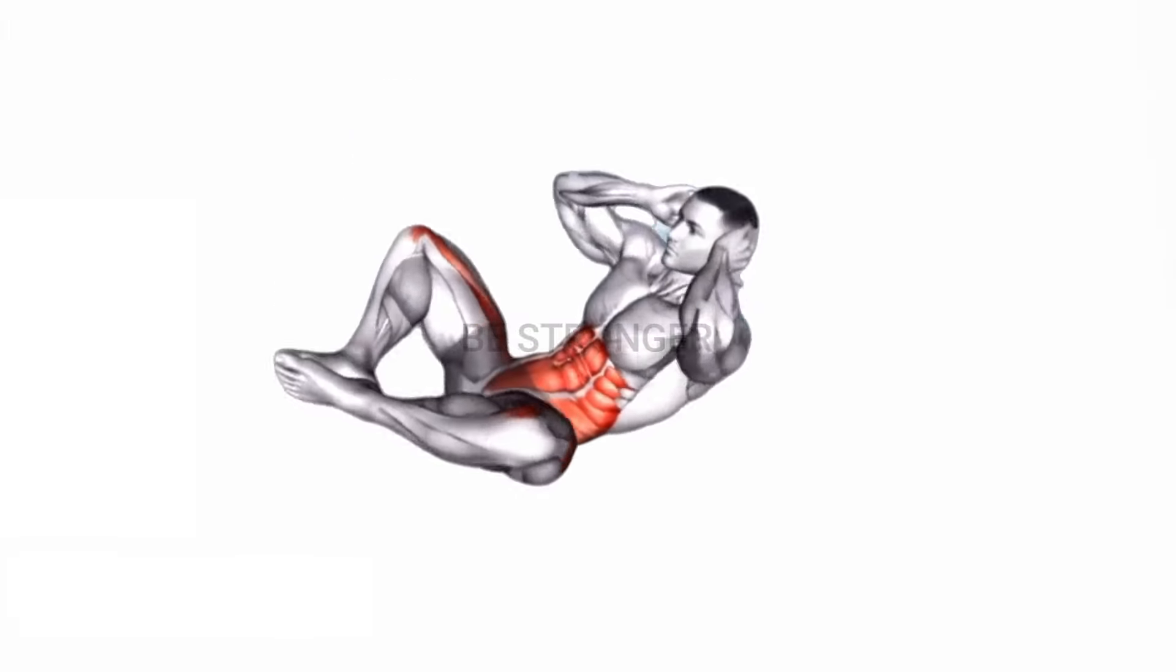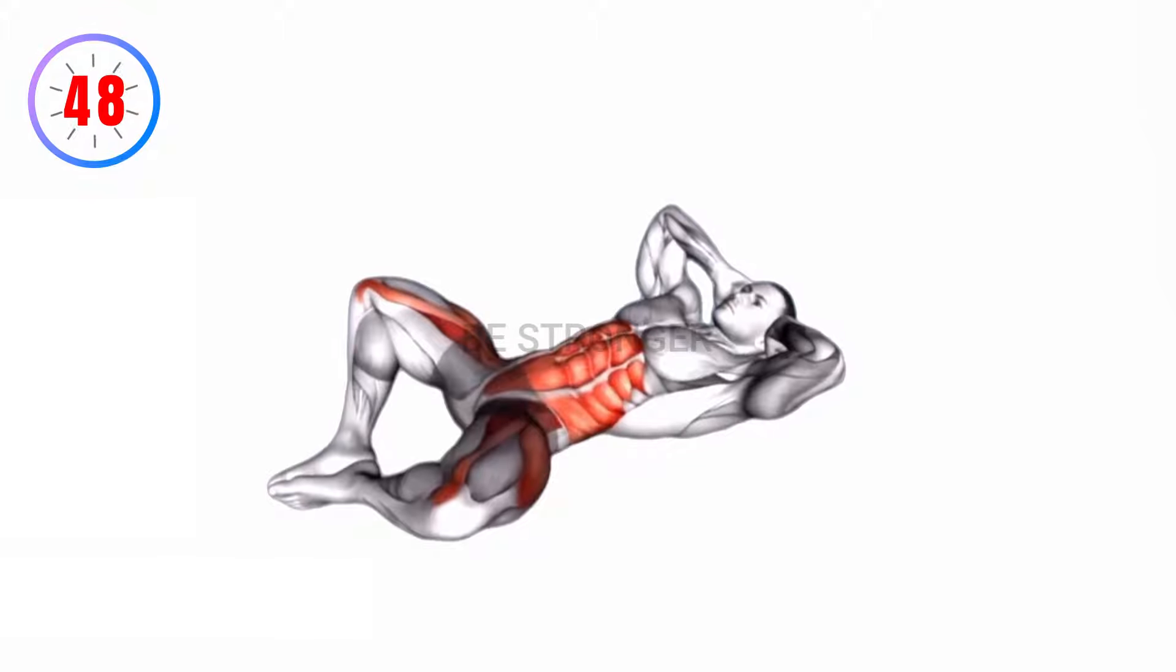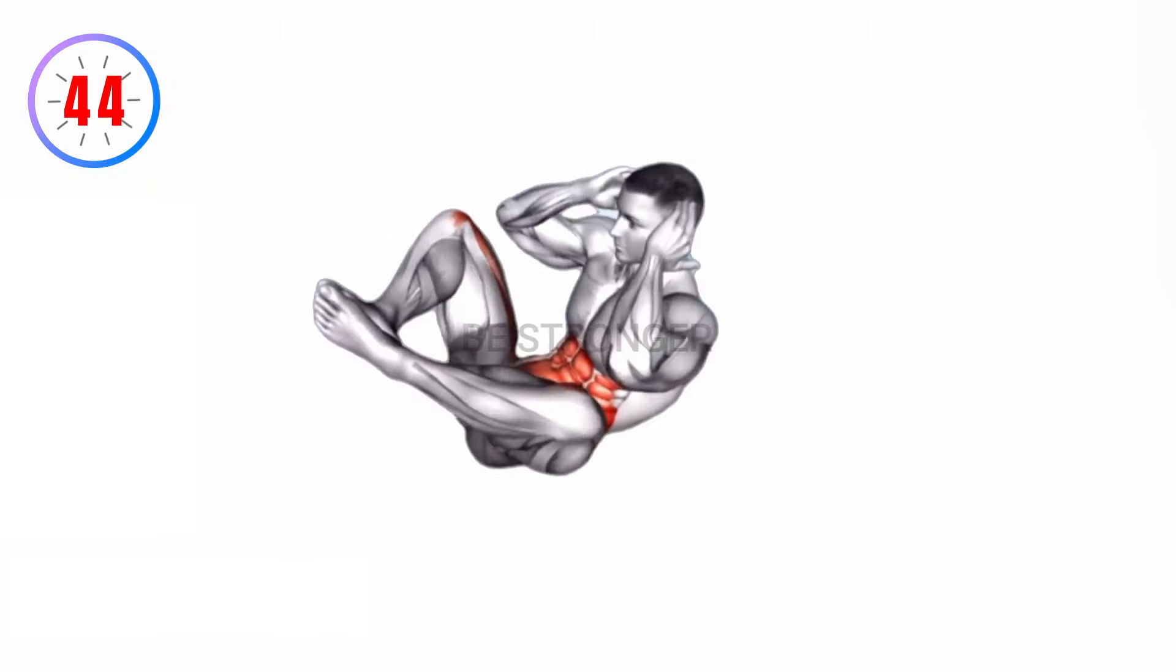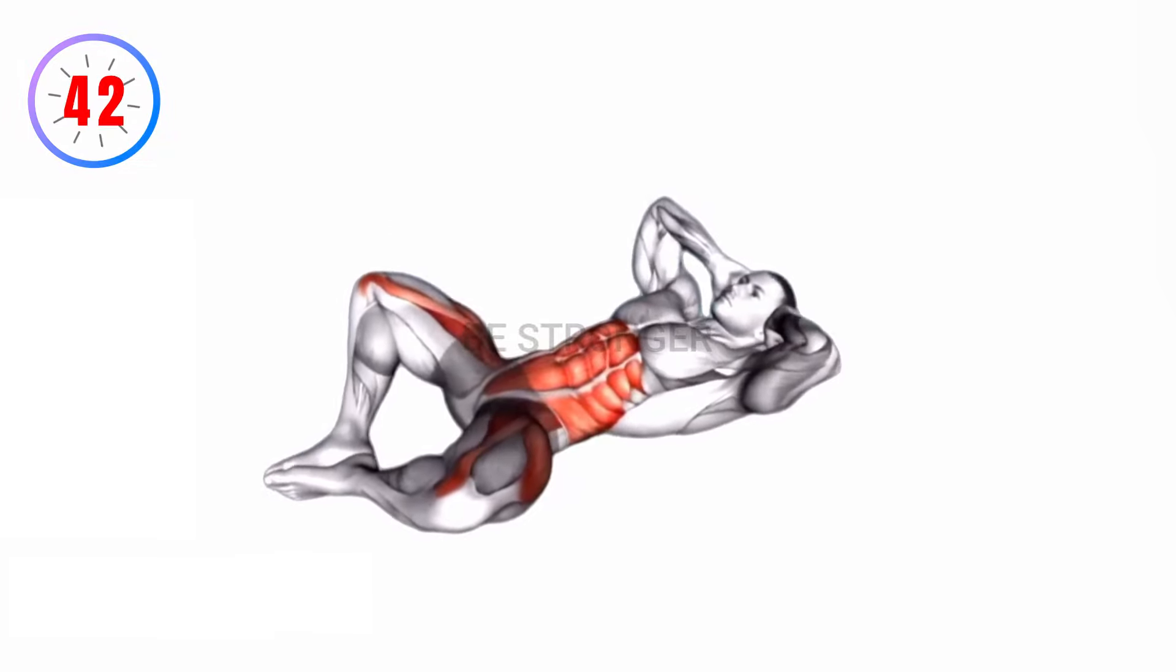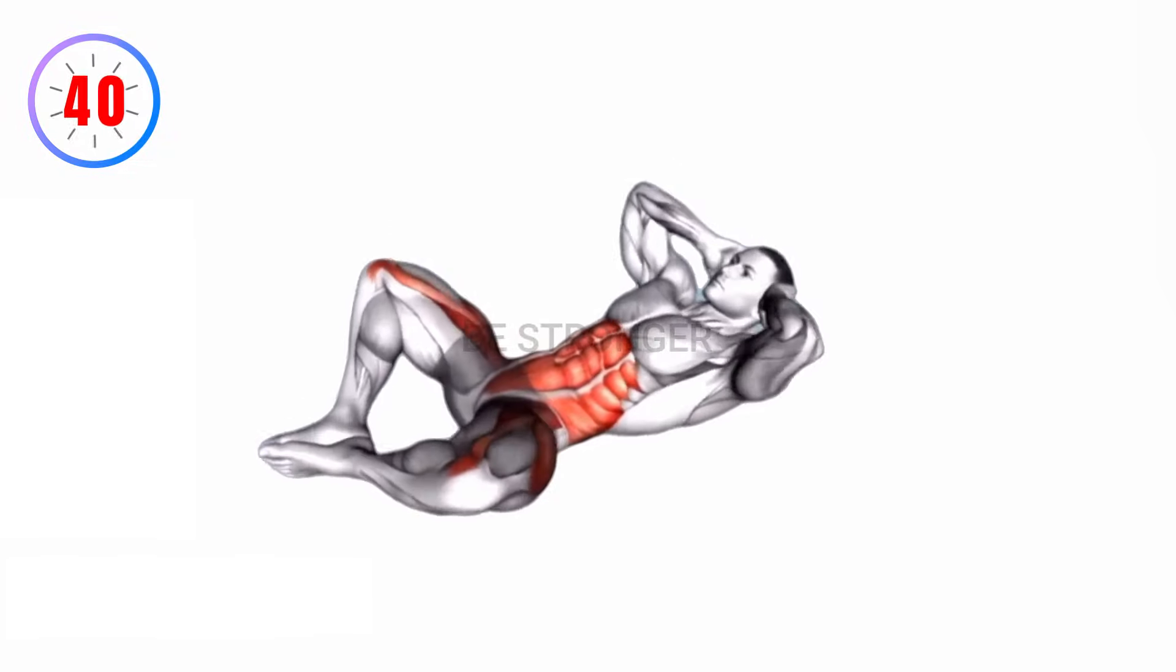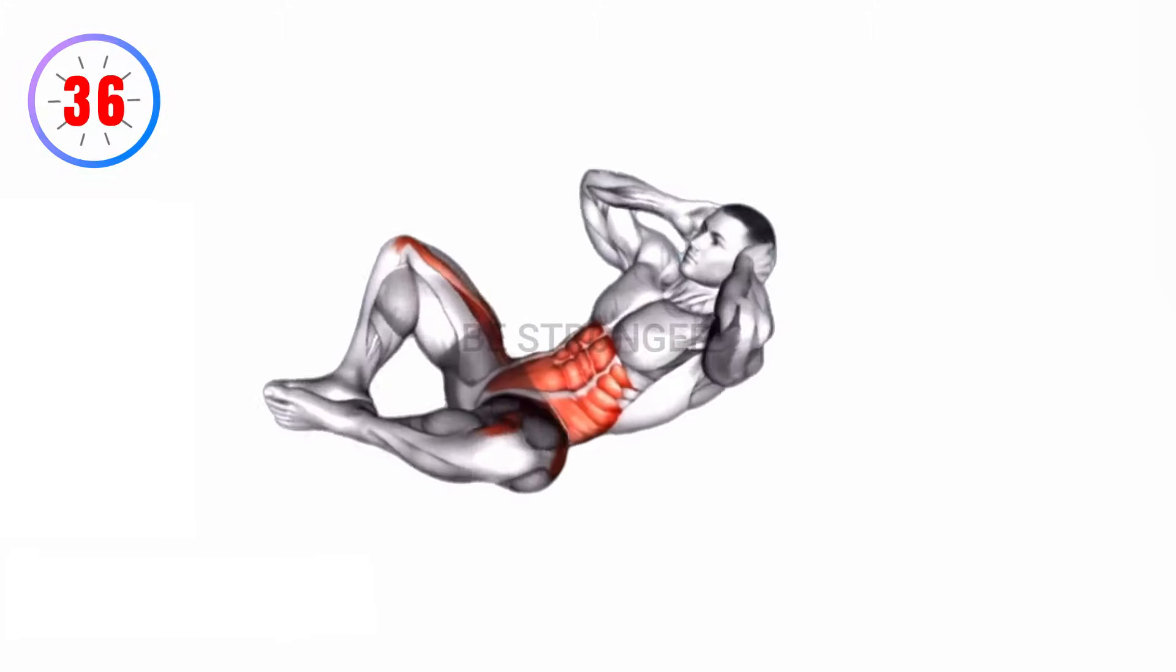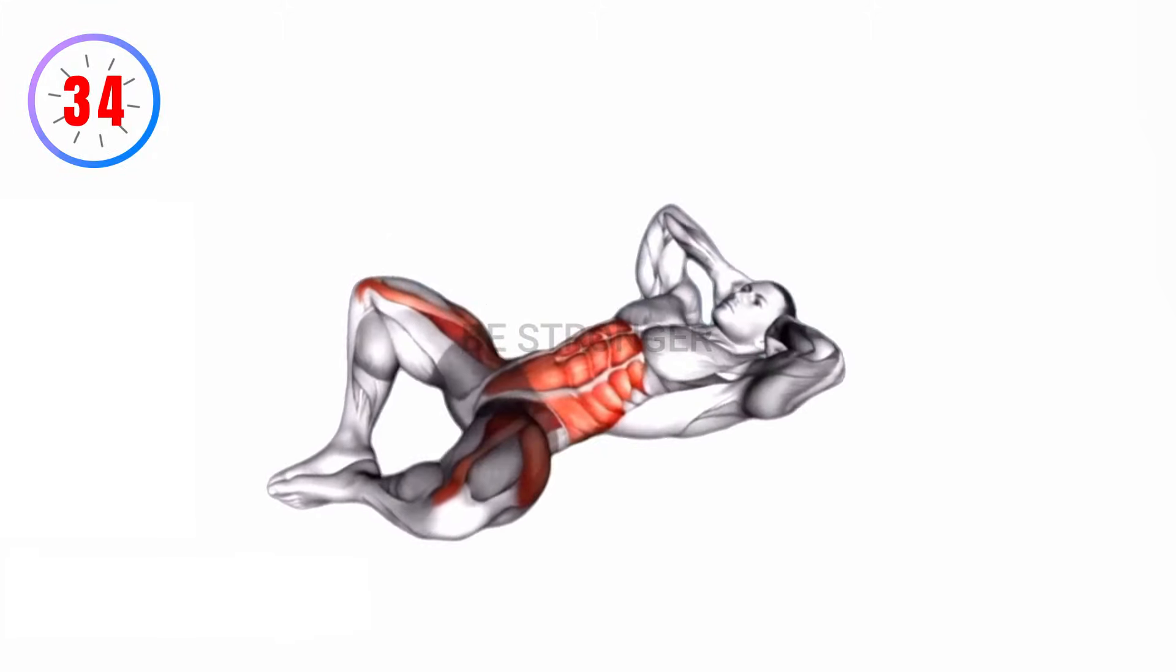Exercise number 3, frog crunch. Lie on your back with your legs lifted and bent at a 90 degree angle, resembling a frog's position. Perform a crunch by lifting your head and shoulders off the ground while bringing your knees towards your chest. This movement effectively engages the lower belly muscles, promoting a stronger and more defined core.